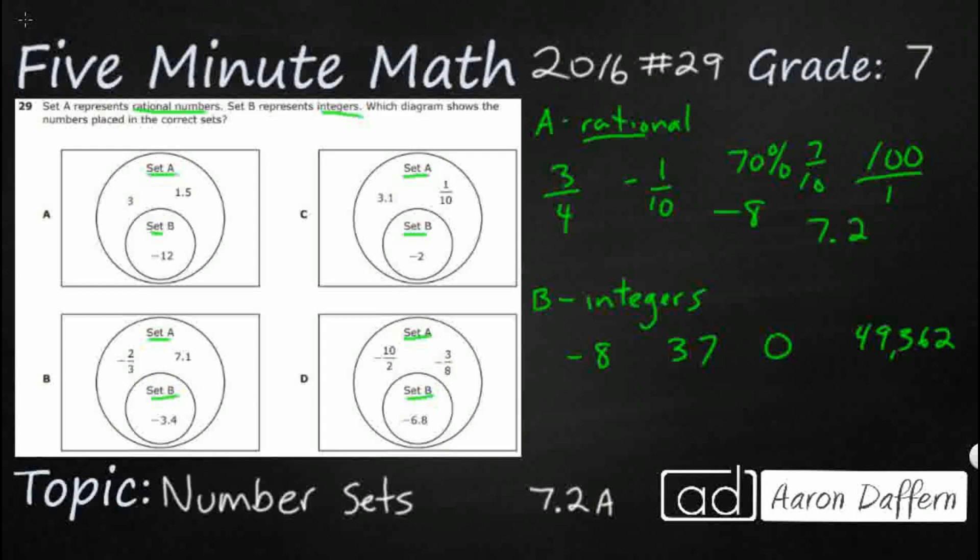Like watch this. 7.2 can go up in my rational because if I wanted to, I could make that a ratio of 7 and two-tenths, or if I really wanted to, I could make that 72 over 10. So any of these numbers we could turn into a ratio, we can put up in our top number. Integers are just whole numbers that are either positive or negative. No mixed numbers, no decimals.